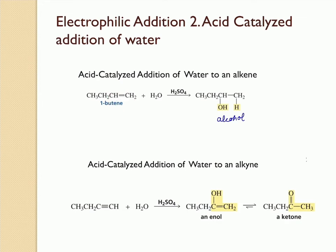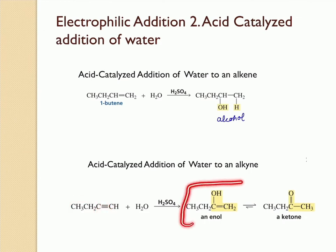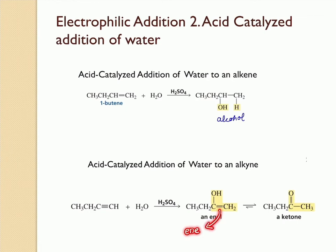Even in the case of acid-catalyzed addition of water to an alkyne, we are still going to follow Markovnikov's rule, where the hydrogen still goes to the carbon which has the most number of hydrogens, and the OH goes on to the other carbon. But the compound obtained in the case of an alkyne is an enol, where it has a double bond between carbon and carbon and also has a hydroxyl group — the 'en' stands for the double bond and the 'ol' stands for the hydroxyl group.